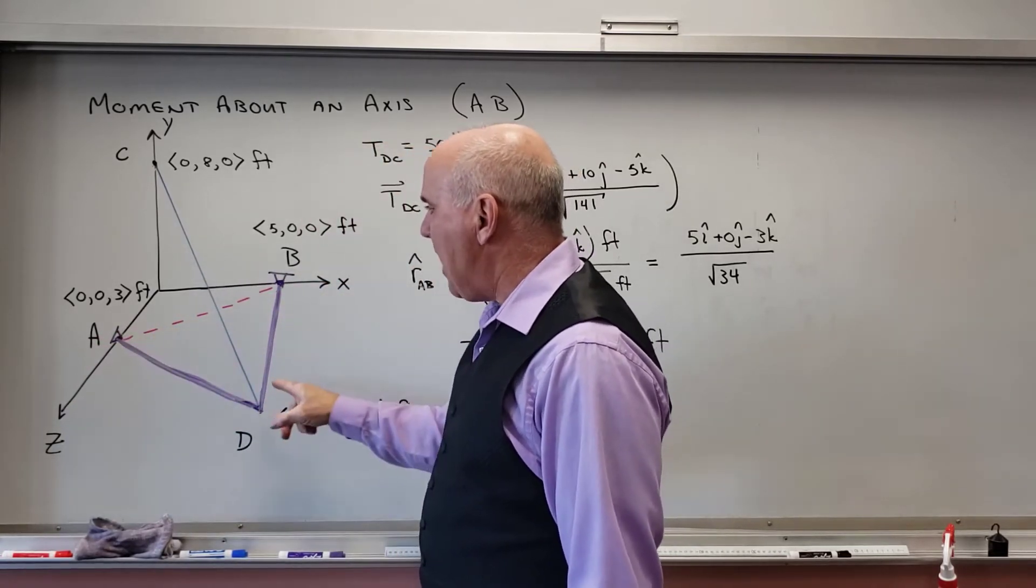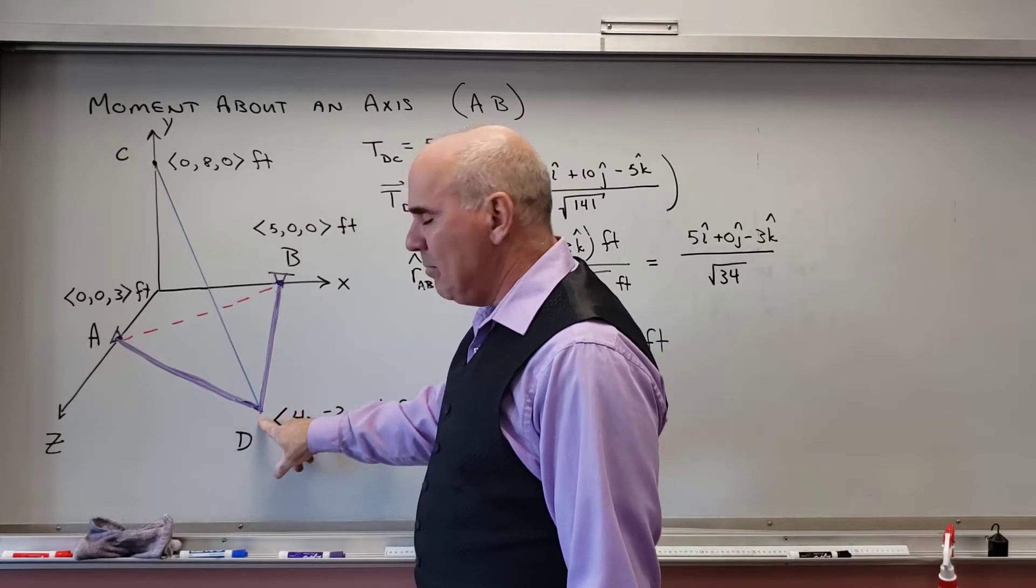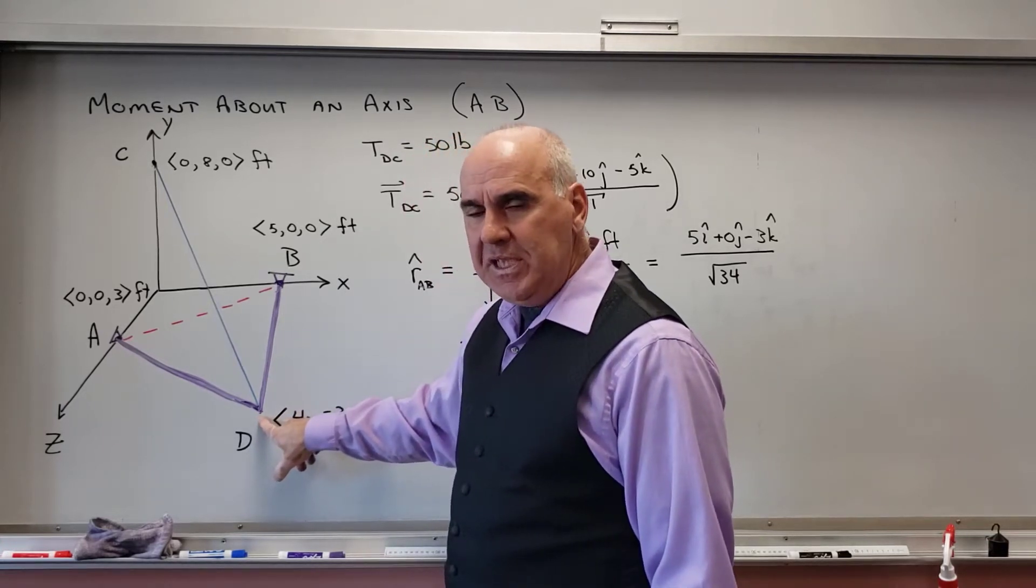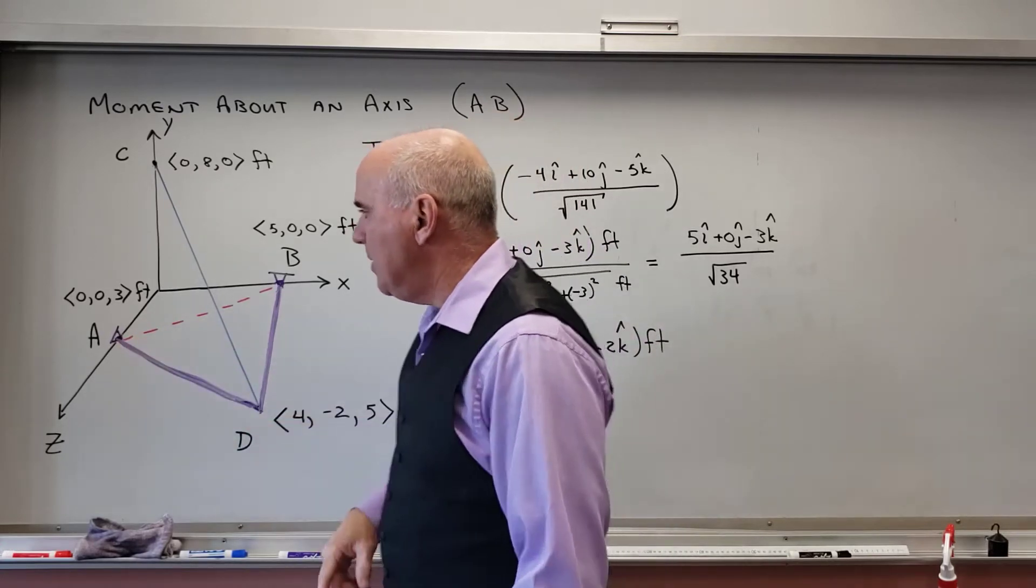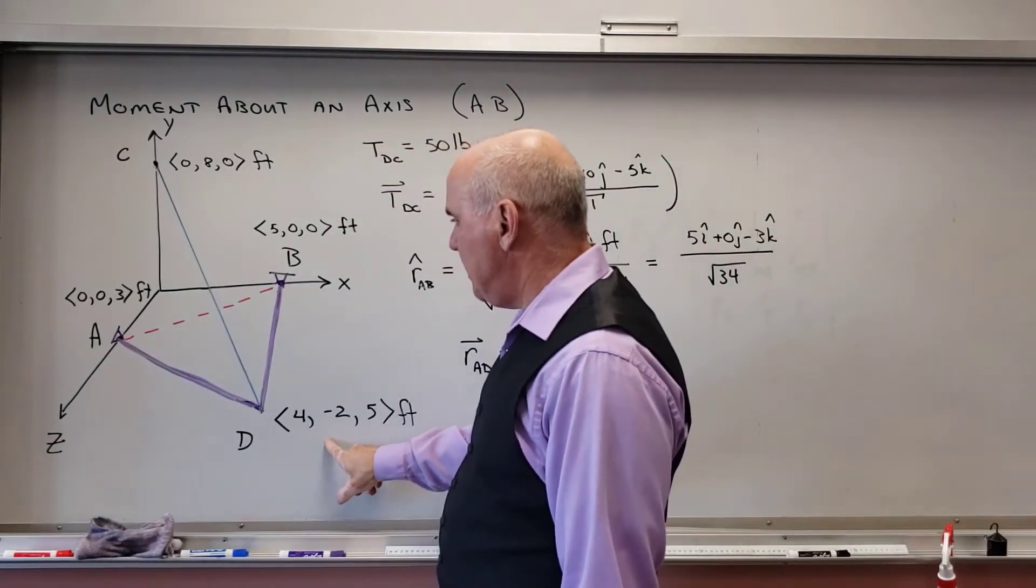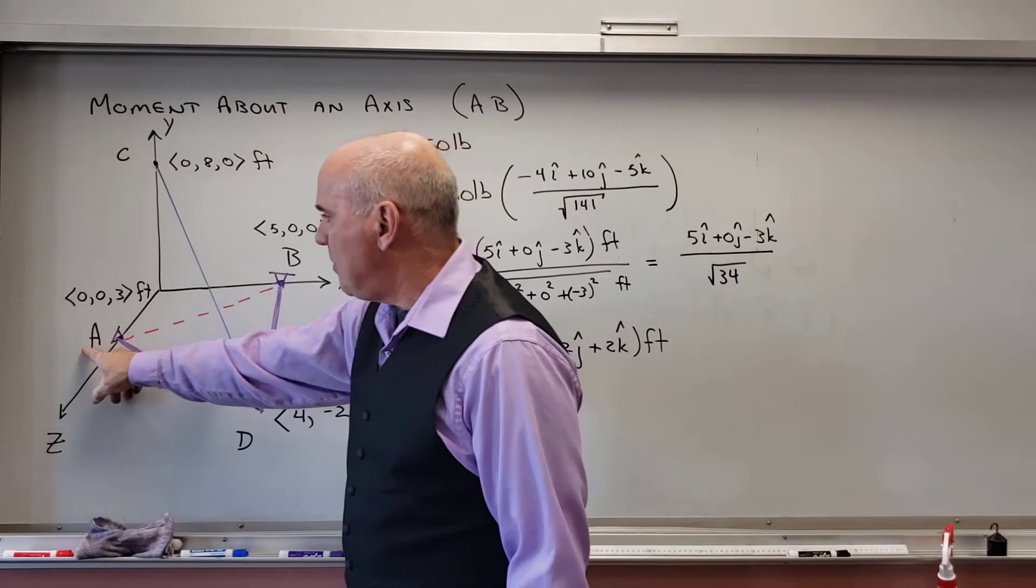So I want the moment about A. So it's going to be the moment due to the force at D about A. So I need R_AD. Same thing. I take the position of D, and I subtract the position of A.